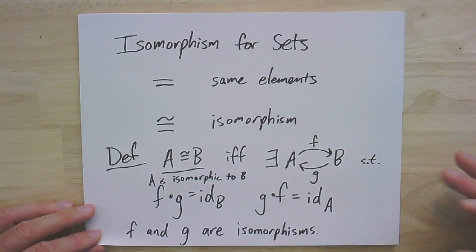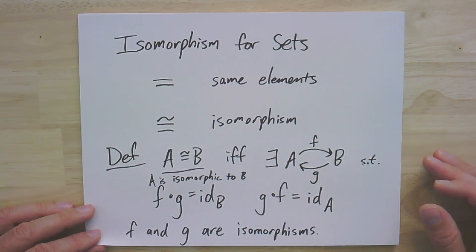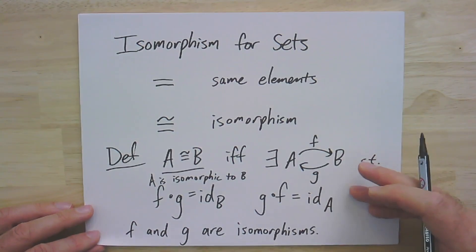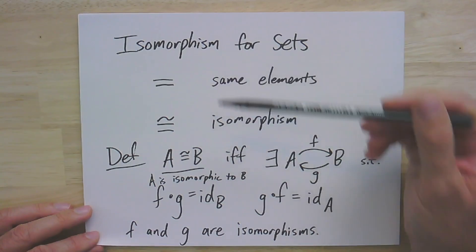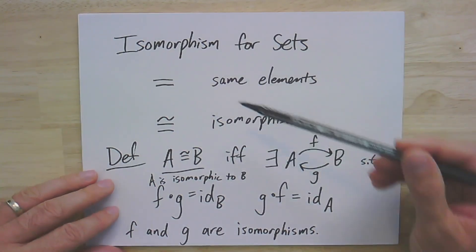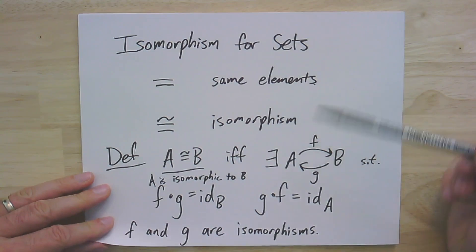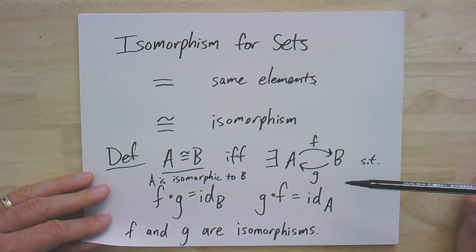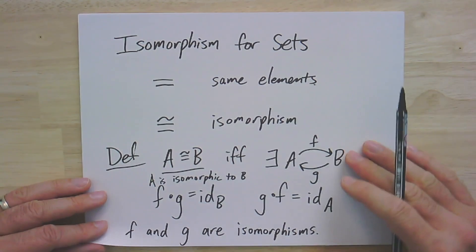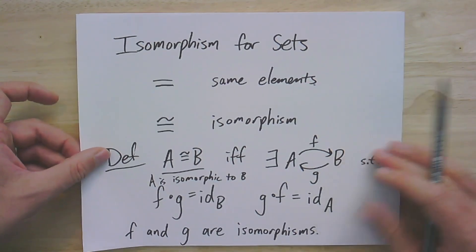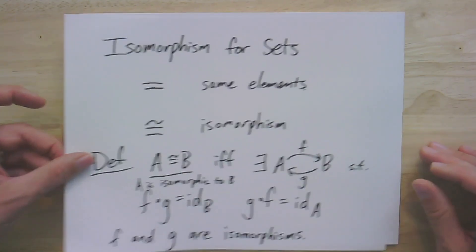Isomorphism of sets gives us a different equivalence relation — we'll leave it as an exercise to prove it's a full equivalence relation. It's a different way of equating sets that's not the same as having all the same elements. We're going to need this a lot, especially when we talk about isomorphism of graphs later in the course, which is going to be one of the most fundamental ideas — it will underlie every graph property we study.